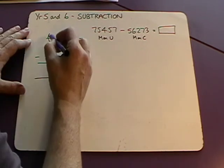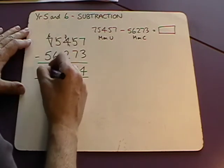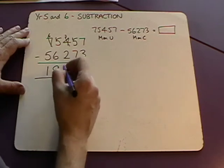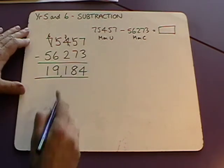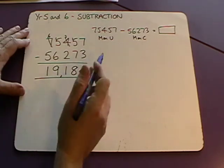And then we've got sixty thousand take away fifty thousand, or six take away five, leaves us with one. One ten thousand. And our answer is nineteen thousand one hundred and eighty four. Put a little comma in there to show the bridge between the thousands and the hundreds.